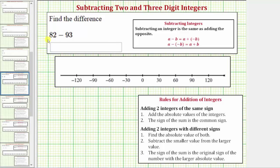We're asked to find the difference. We have 82 minus 93. Because 93 is greater than 82, let's write this difference as a sum.